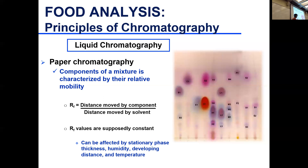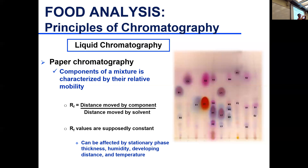Therefore, when you're running samples, it is better to compare within the same paper, not across different papers. The distance from the origin to the center of the spot is the distance the compound traveled. The distance moved by the solvent is measured to where the solvent front stopped, which you can visually see when you stop the development.